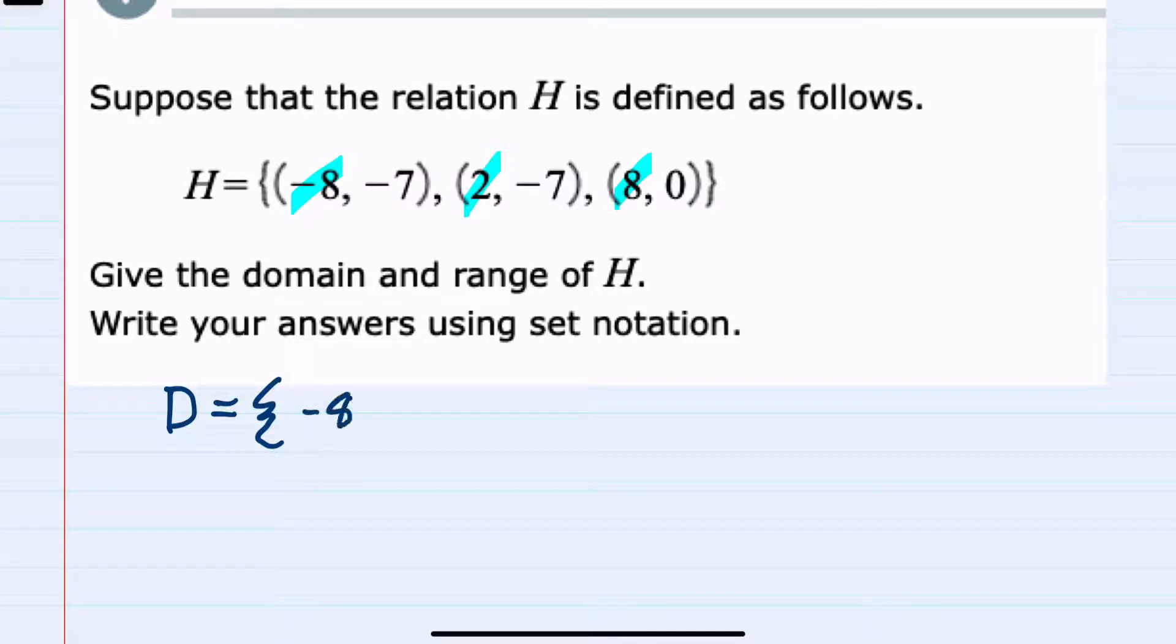We have negative 8, 2, and 8. That is the set of all of the inputs or the domain of this relationship, and then to find the range.